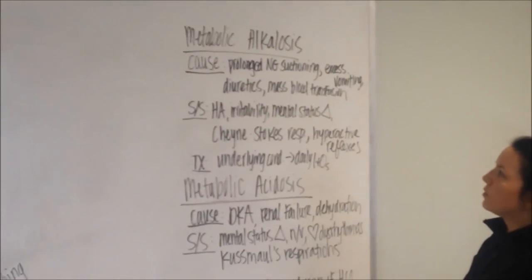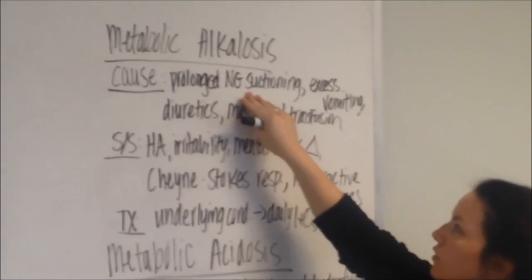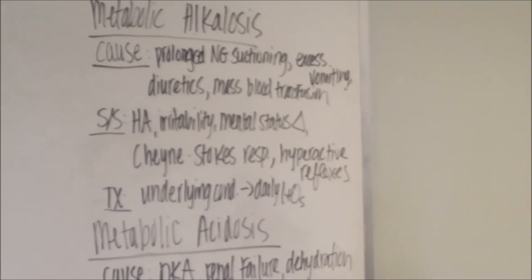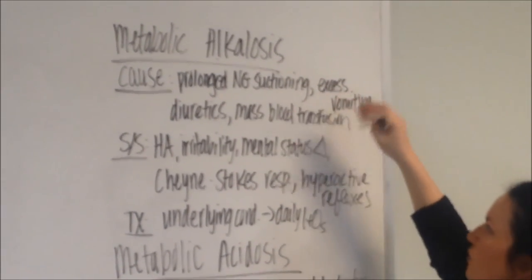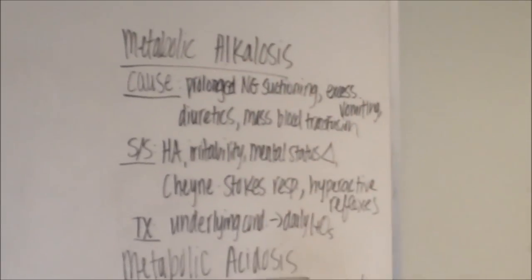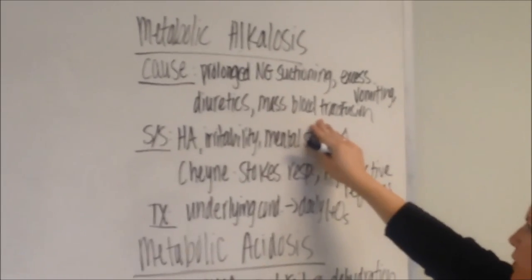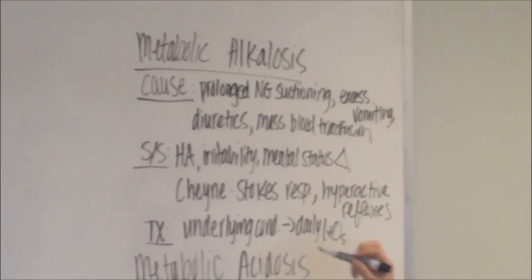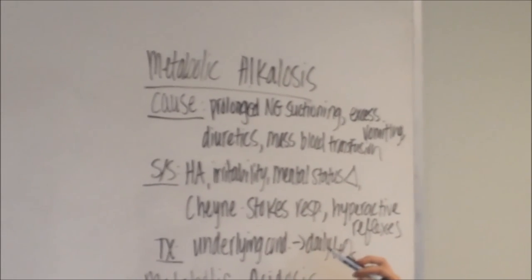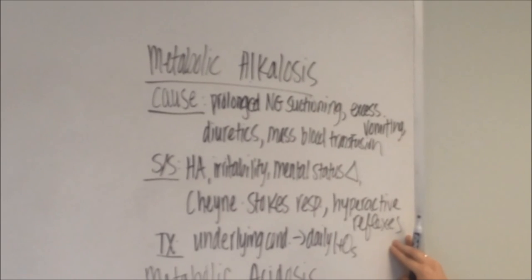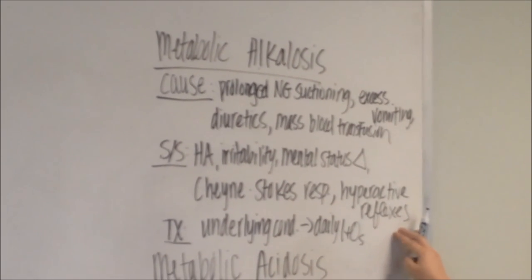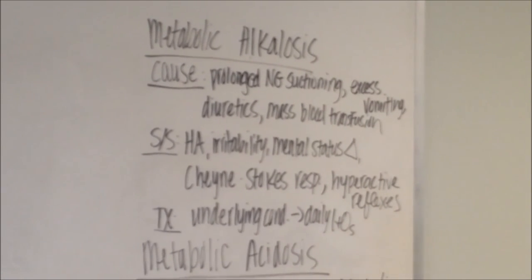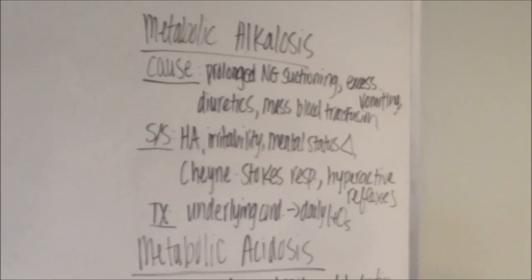Metabolic alkalosis, the cause would be, could be prolonged NG suctioning. So if you're suctioning continuously the stomach acid, you could throw yourself into a base state. Excess vomiting, kind of the same line. You're getting rid of too much acid in your body, you'll be coming into a basic state. Diuretics and the massive blood transfusion would also throw you into metabolic alkalosis. Our patient would have a headache, irritability, mental status change, Chaney-Stokes respiration, so for respirations with periods of apnea, and then hyperactive reflexes, so like our Chvostek's and Trousseau's reflexes. We would want to make sure that we maintain daily I's and O's, especially if there are excess vomiting, diuretics, so we keep strict I's and O's and fluid calculations on them.